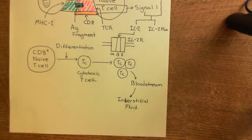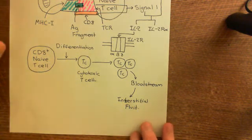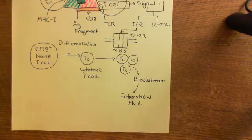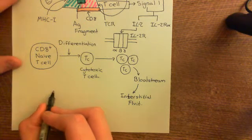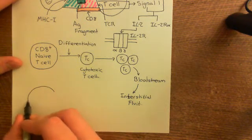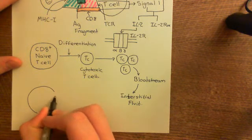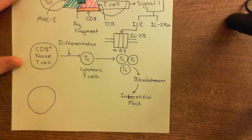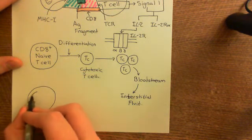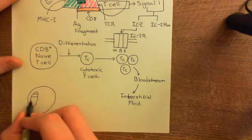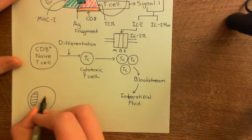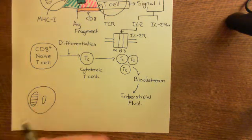What are these cytotoxic T-cells going to do once they get to the site of infection? Basically, they are going to cause the death of cells which are infected with the pathogen. Normal cells are capable of antigen presentation. Here is our normal cell with its nucleus, and this cell is infected with our intracellular pathogen.